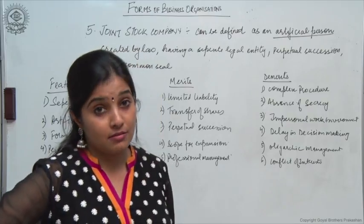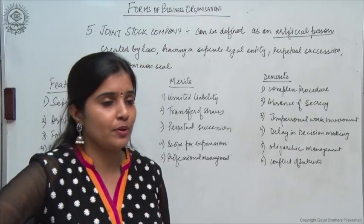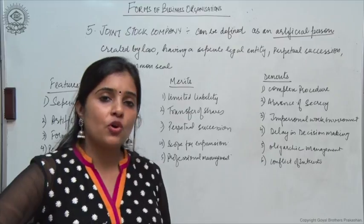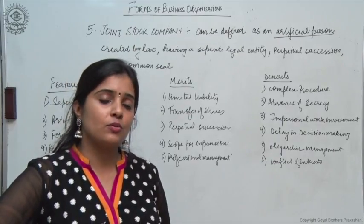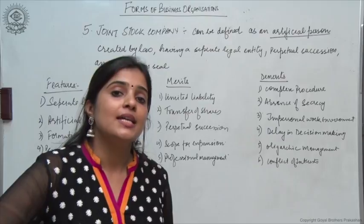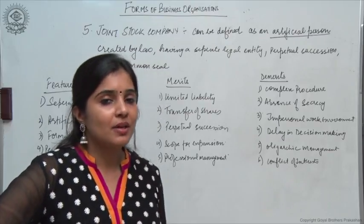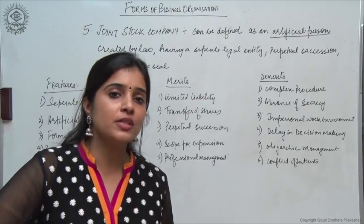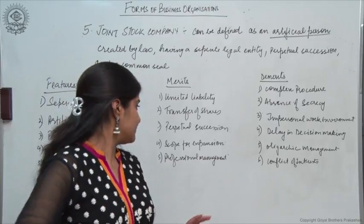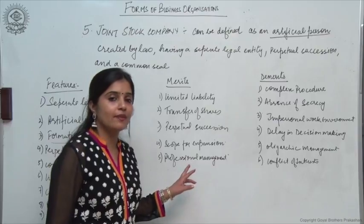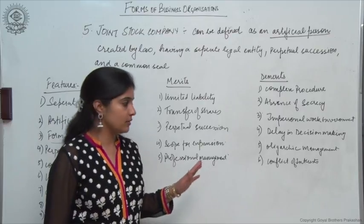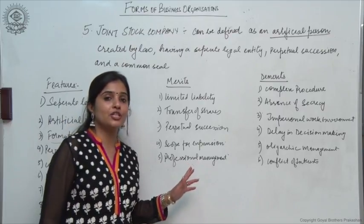There is a case often asked in question papers: there was a board meeting going on and there was a bomb blast. All the members — the board of directors and shareholders present — died in the bomb blast. Will the company still continue to exist? The answer is yes, the company will continue to exist, because the company has an entity separate from that of its owners. Even if all the owners have died, the company will still continue to exist. There is also a lot of scope for expansion because with a huge pool of financial resources, the company can invest in many lucrative options.